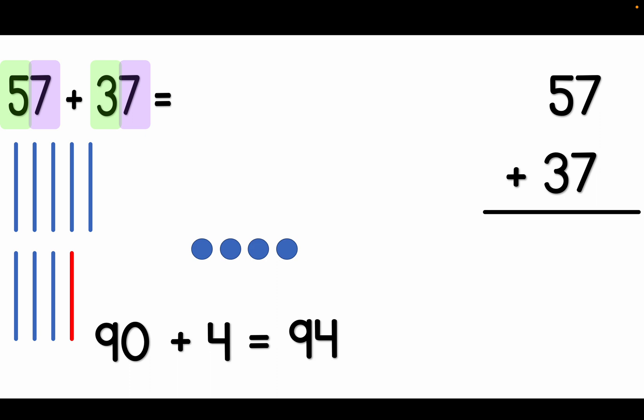Therefore, 57 plus 37 gives us 94. I would like for you to give this strategy a try. Are you ready? Good luck.